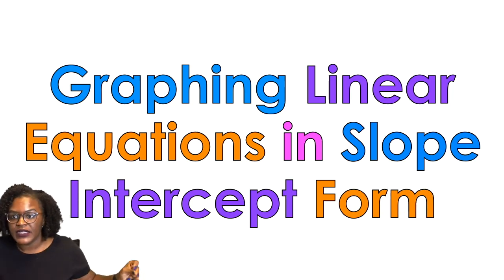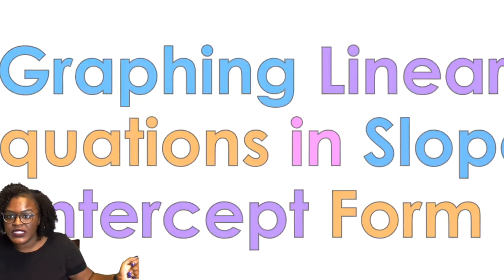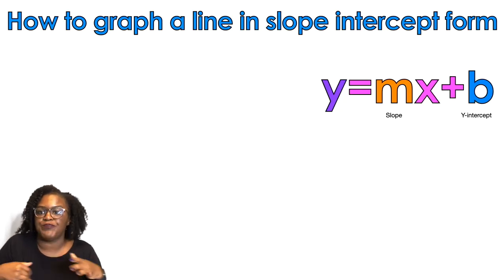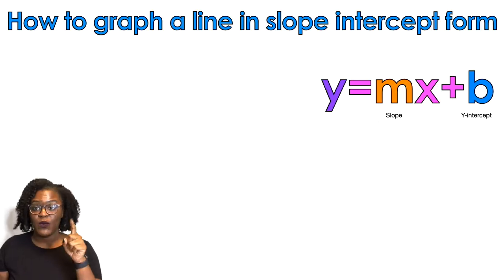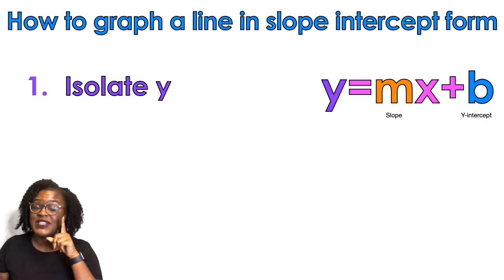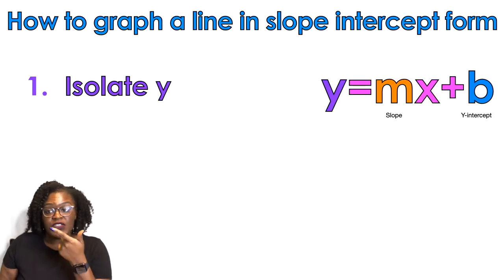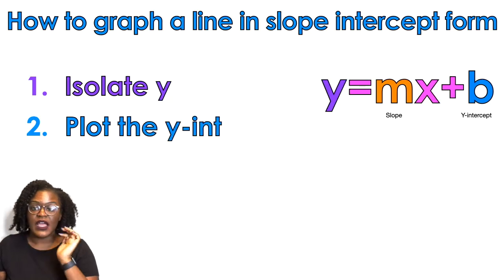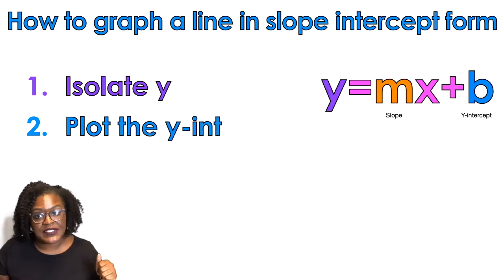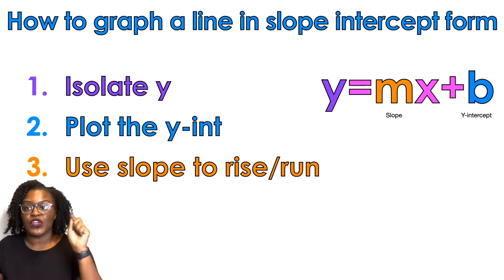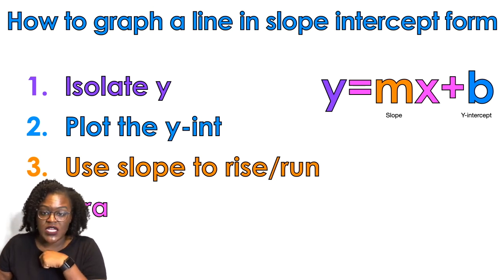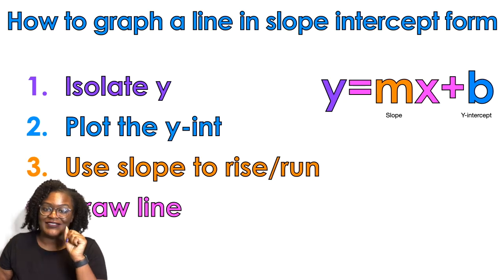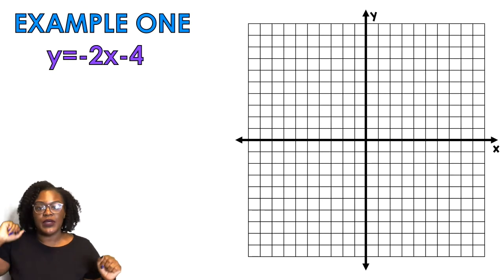Graphing linear equations in slope intercept form. How to graph a line in slope intercept form. Isolate y, it means get y by itself. Plot the y-intercept, use slope to rise over run, draw the line. Is that easy baby?